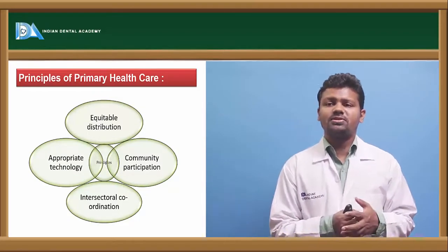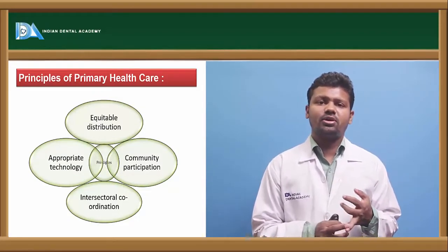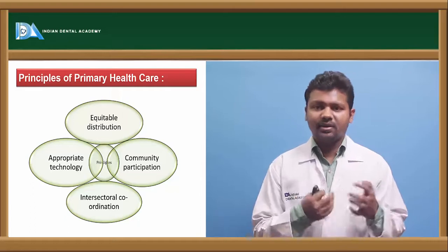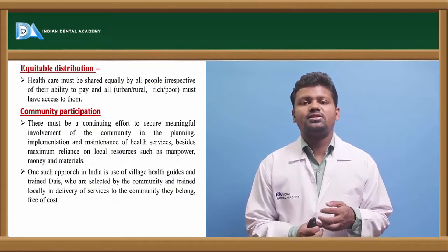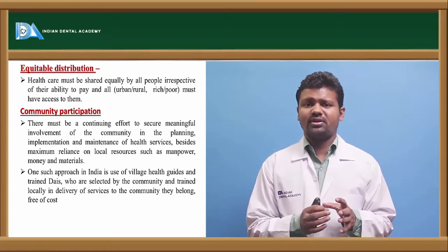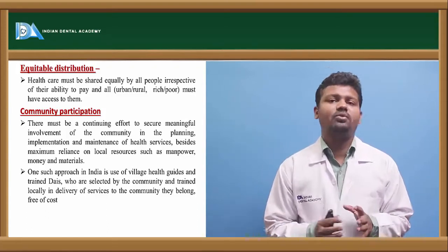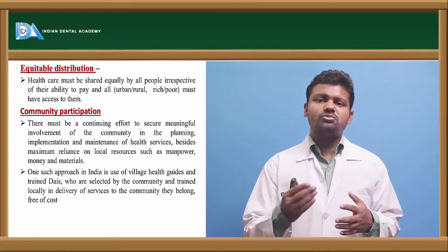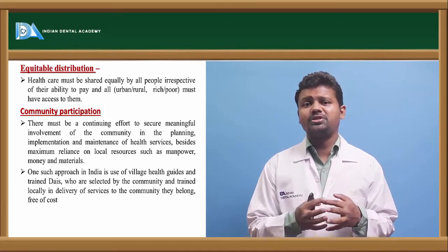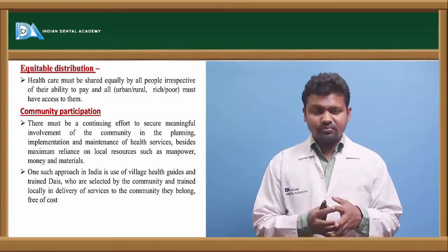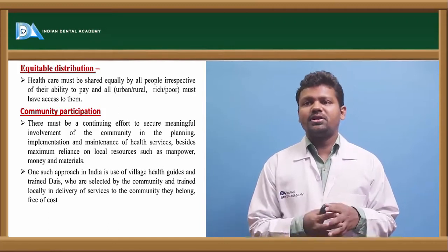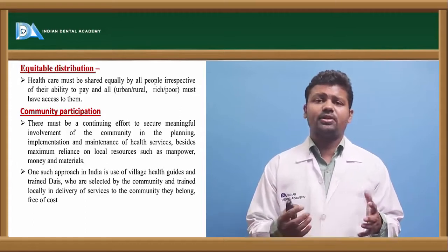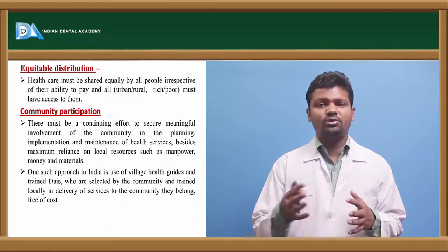There are five principles of primary healthcare. First is equitable distribution — health services have not been equally divided among people and are more urban-oriented. Under primary healthcare, health should be equally distributed to people irrespective of whether they are rich or poor, of different caste or creed. It should be easily accessible to every individual.